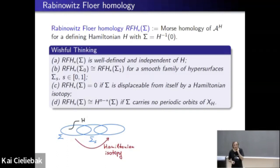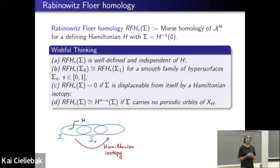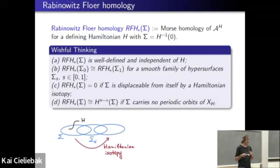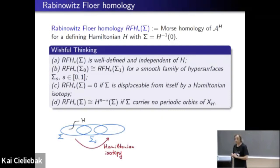Now we have a nice action functional, and I want to take Morse homology of that action functional to find critical points and maybe even count them. This is living on a vastly infinite-dimensional loop space, so it's not clear how to do Morse theory there. The correct way was taught to us by Floer in the late 1980s — he explained how to make sense of infinite-dimensional Morse theory of such functionals, which became known as Floer homology. When Frauenfelder and I saw that functional, we realized we should be able to define Floer homology of it, which we call Rabinowitz Floer homology.